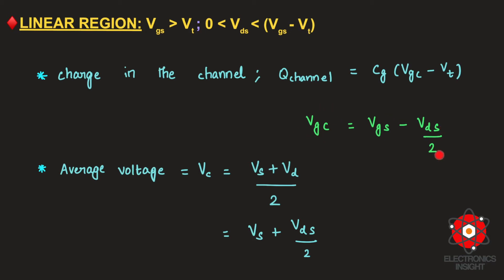We also derived VGC, the gate-to-channel potential, which equals VGS − VDS/2, and the average channel voltage VC = (VS + VD)/2, which can be rewritten as VS + VDS/2. This was covered in Part 1 — the link is provided in the description box below. Please watch that video before continuing with this derivation.